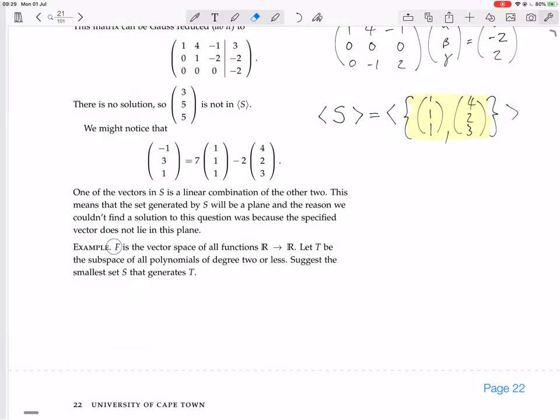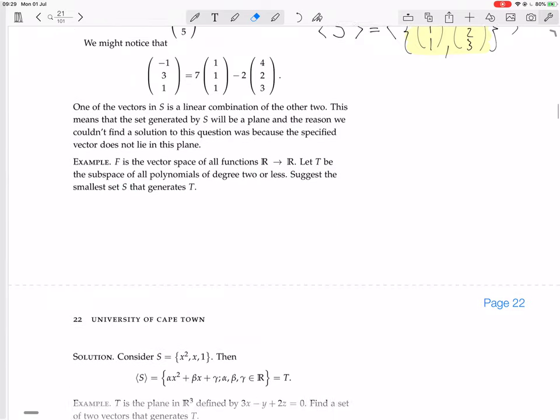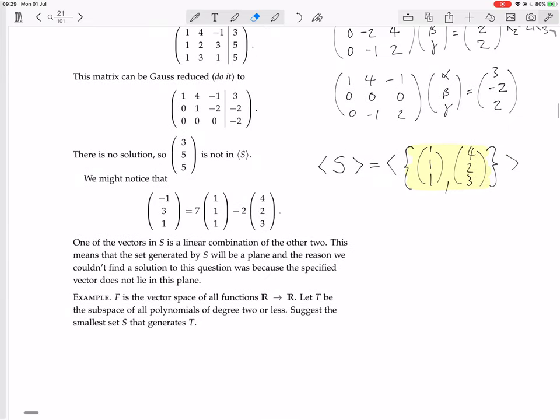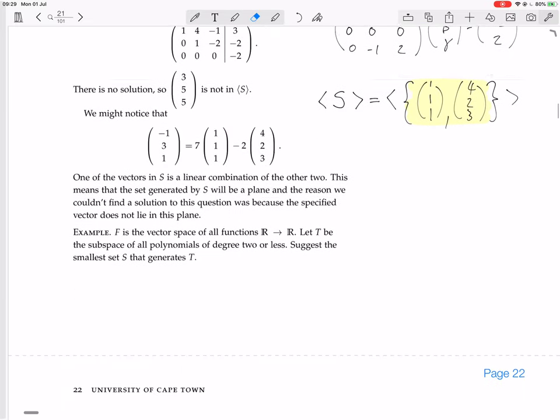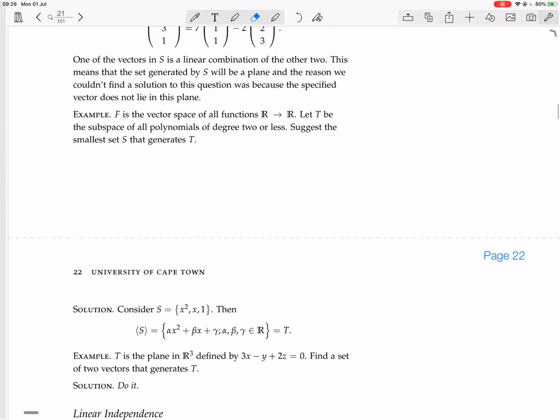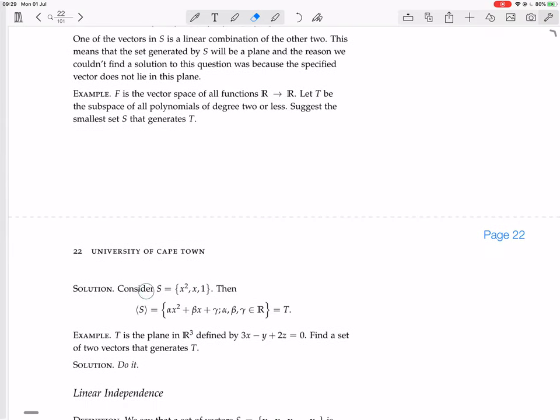Now we have another example. F is the vector space of all functions from reals to reals. Let T be the subspace of all polynomials of degree 2 or less. Suggest the smallest set S that generates T. Okay, so you should try and solve this for yourself first, as with all these things. Consider S equal {x², x, 1}.